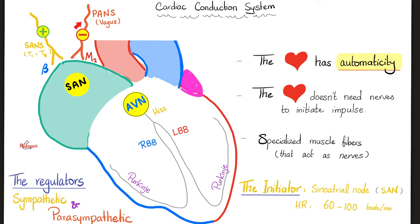What is the function of the nerves connected to the heart? The sympathetic nervous system can speed it up above 100 beats per minute. The parasympathetic can slow it down below 60. But they are not initiators — they are just regulators. Who is the initiator? The SA node. Who are the regulators? Sympathetic and parasympathetic. Sympathetic will speed the heart up; parasympathetic will slow it down.